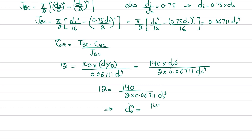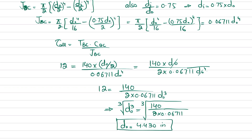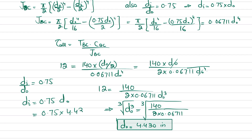Solving for d_outer³: d_outer³ = 140 / (2 × 0.06711 × 12). Taking the cubic root gives d_outer = 4.430 inches, which is the outer diameter of the tube. Since d_i / d_outer = 0.75, d_inner = 0.75 × 4.430 = 3.322 inches, which is the inner diameter.